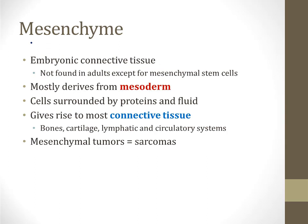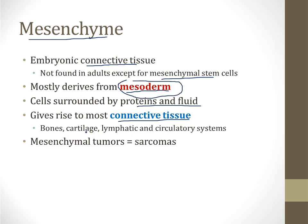You will read in textbooks about an embryonic tissue type called the mesenchyme. Mesenchyme is the embryonic connective tissue — it exists only in the embryo and is not found in adults except as mesenchymal stem cells. The mesenchyme mostly derives from mesoderm, and it consists of cells surrounded by proteins and fluid that serve as connective tissue in the embryo. The mesenchyme gives rise to most connective tissue in the adult, such as bones, cartilage, and lymphatic and circulatory systems. Tumors called sarcomas are of mesenchymal origin, meaning mostly mesodermal — involving bones, cartilage, or connective tissue.